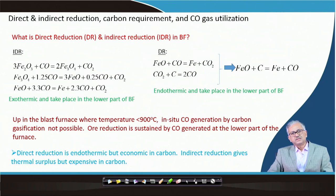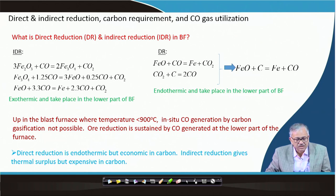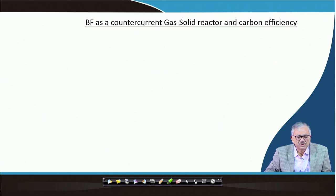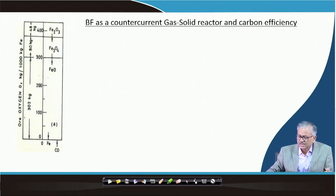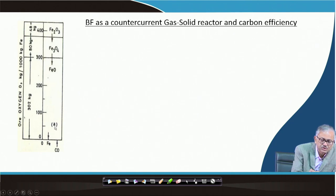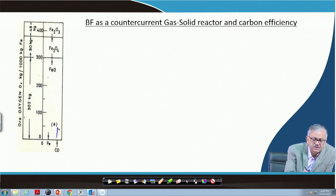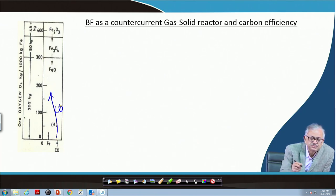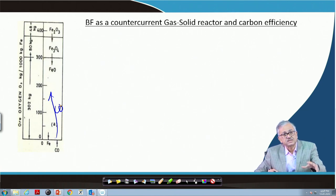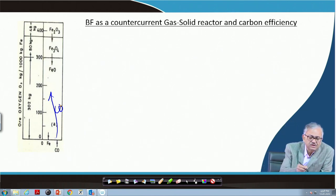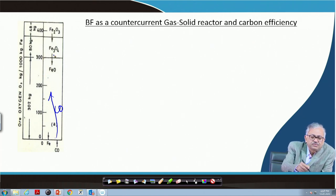If we can combine direct and indirect reduction, we can further make it economic. The blast furnace is a counter-current gas-solid reactor. CO gas is produced at the bottom and moves upward. As it moves up, the CO gas first encounters FeO, then Fe₃O₄, and at the top Fe₂O₃. The oxidation potential of Fe₂O₃ is highest — it is least stable — while Fe is most stable.